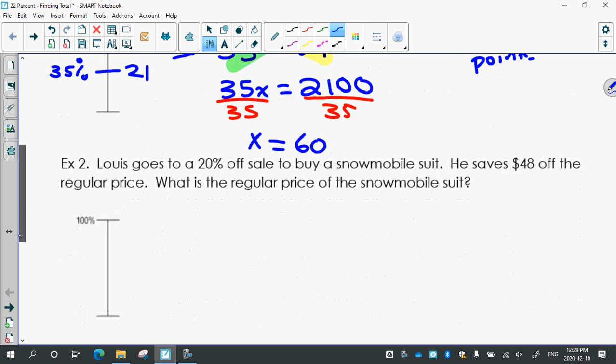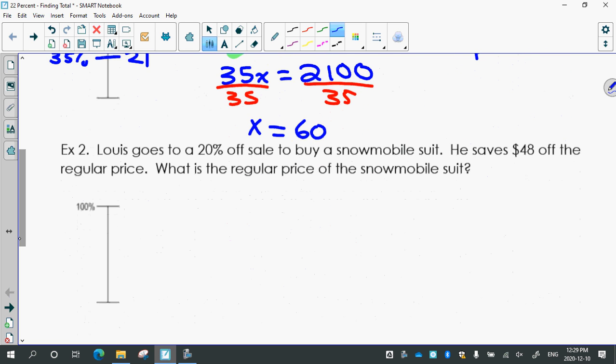Finding the total, remember. Lewis goes to a 20% off sale to buy a snowmobile suit. He saves $48 off of the regular price. What is the regular price of the snowmobile suit? So 20% is pretty low down here compared to 100. And he saves, so his discount is the $48. So if 20% of that price was $48, what was the original price?